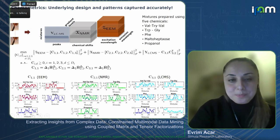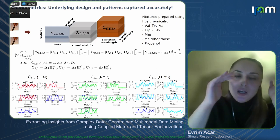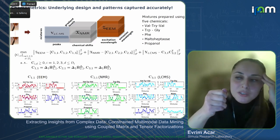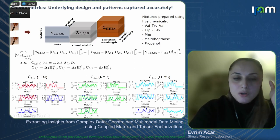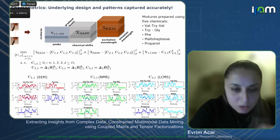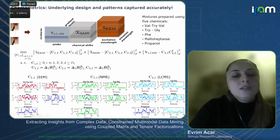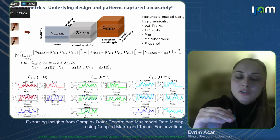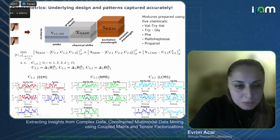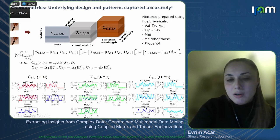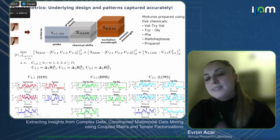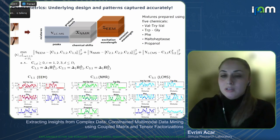Fitting this model using AOADMM, we get factor matrices corresponding to the mixture mode — a mixture by number-of-components matrix where each column reveals the relative concentration of a chemical in the mixtures. We have five components corresponding to five chemicals and know the true experimental design to validate the model. The model captures three components from fluorescence data, all five chemicals in NMR, and four in LC-MS, plus an additional component in LC-MS for expected structured noise.